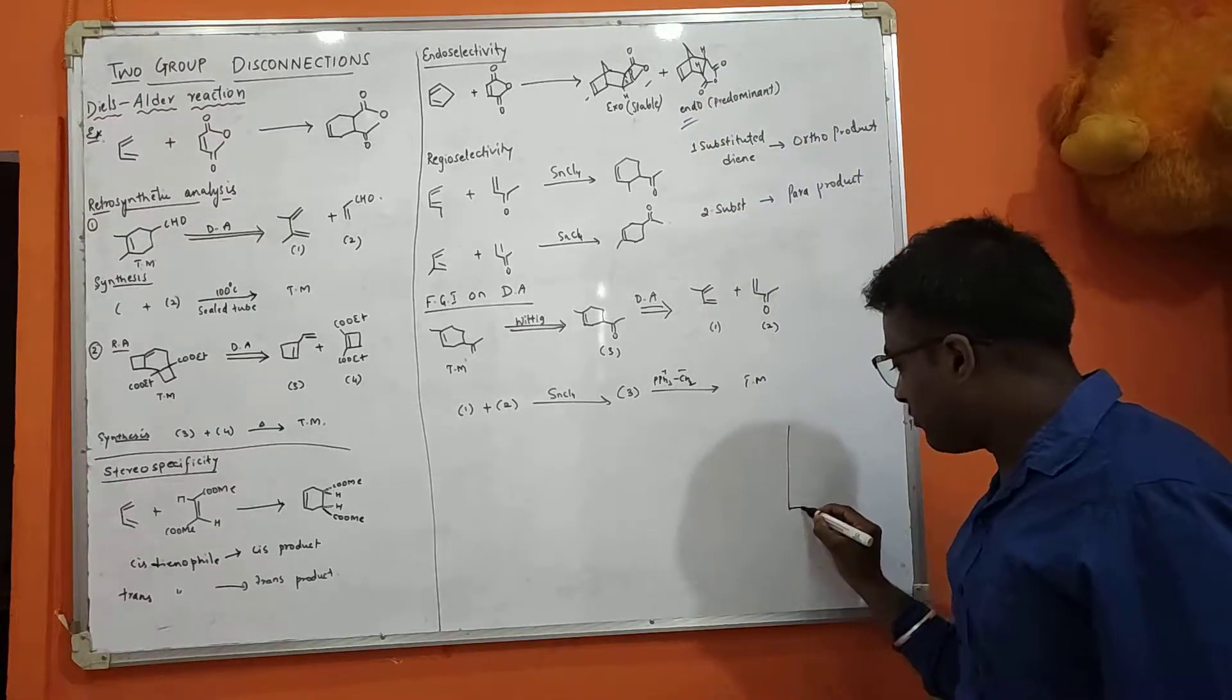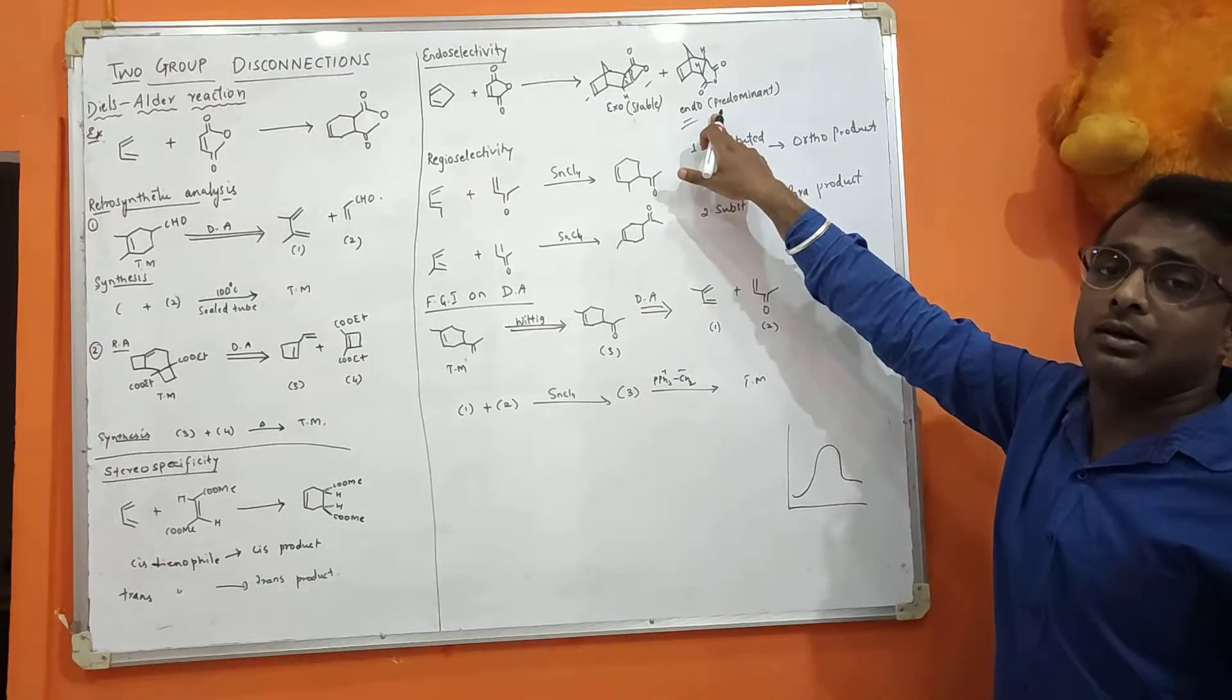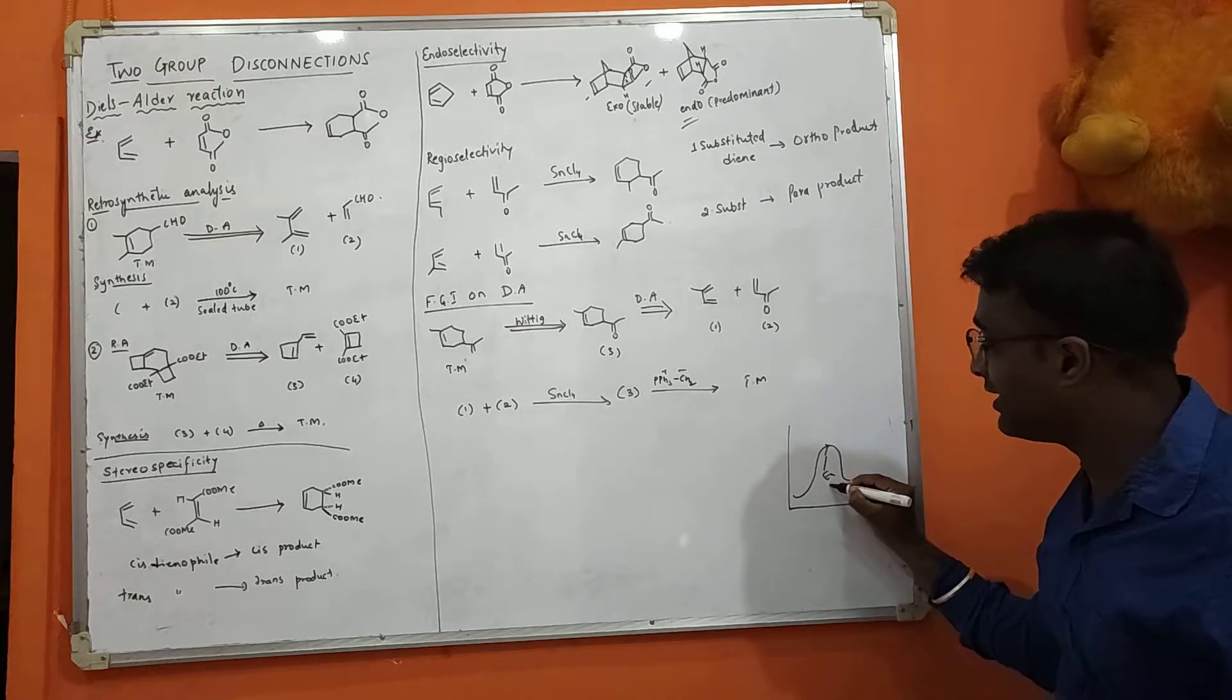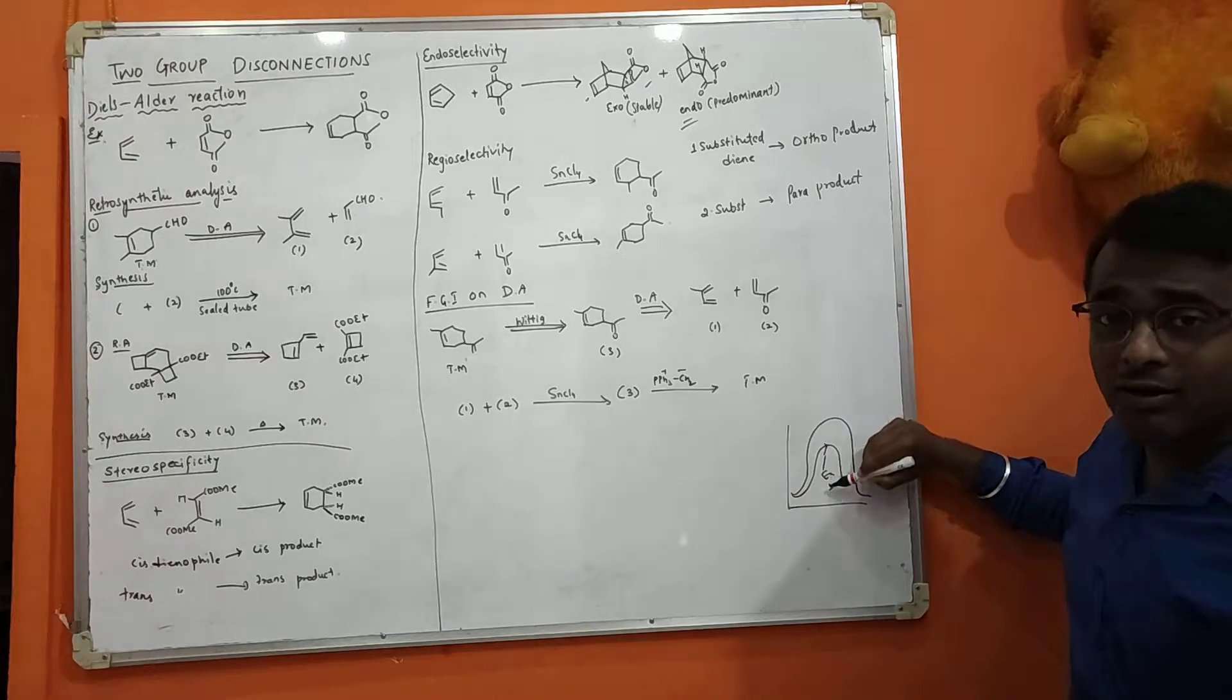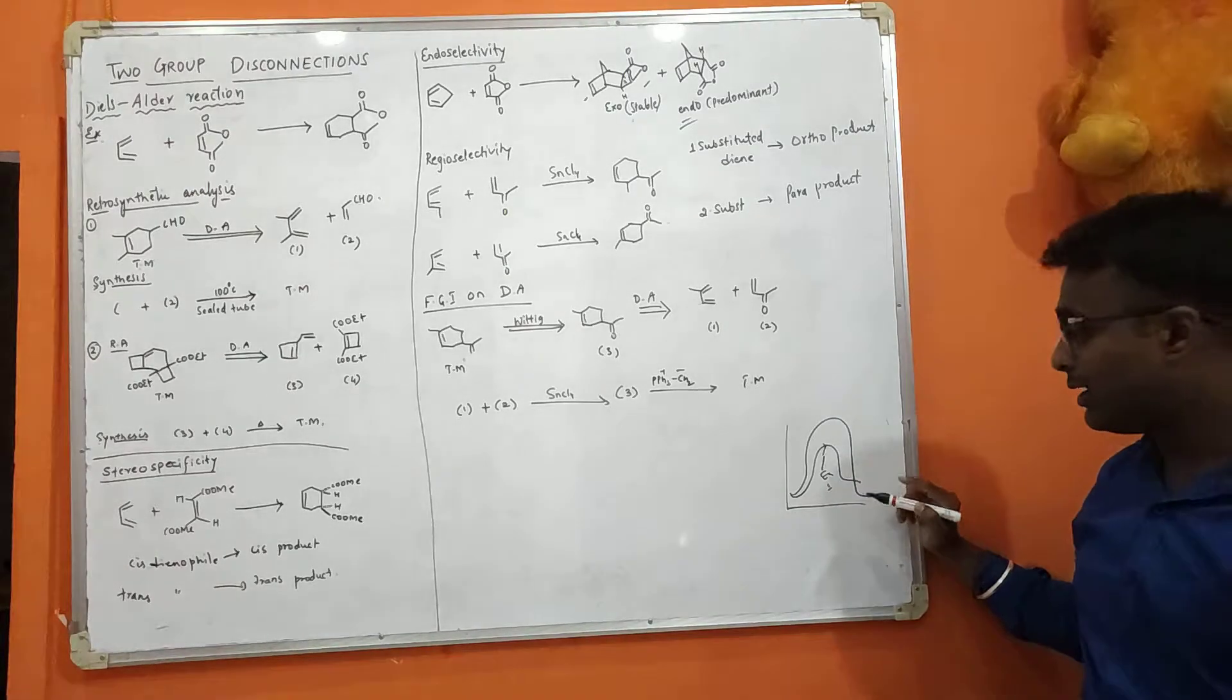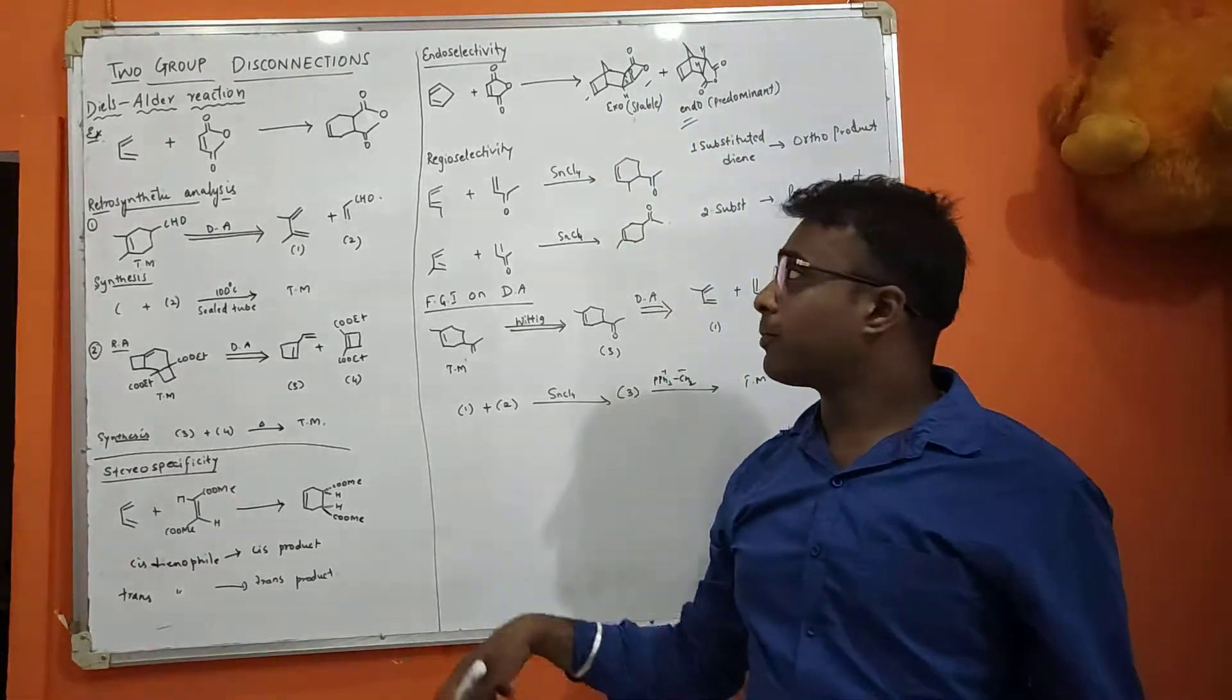If you see the graph, energy of activation required to form this endoselectivity product is less. But for the exo, you require more energy of activation to form the product. But the product formed is much more stable than the endo.